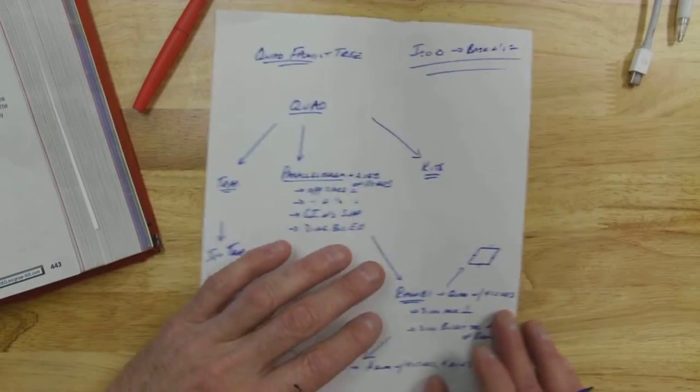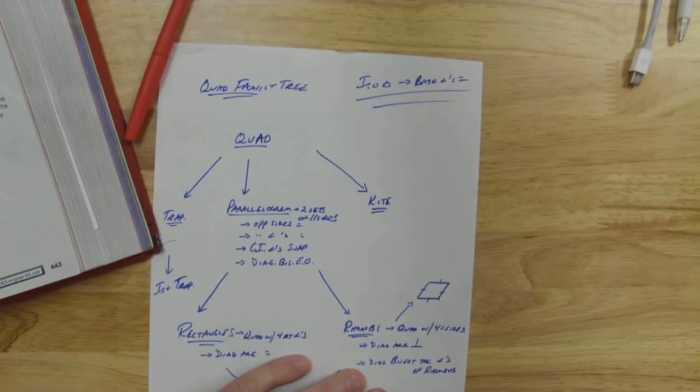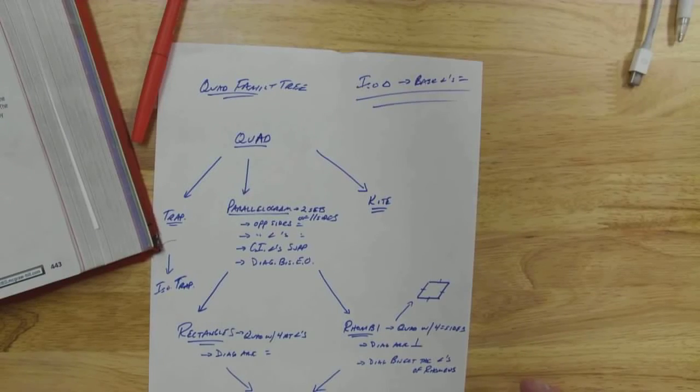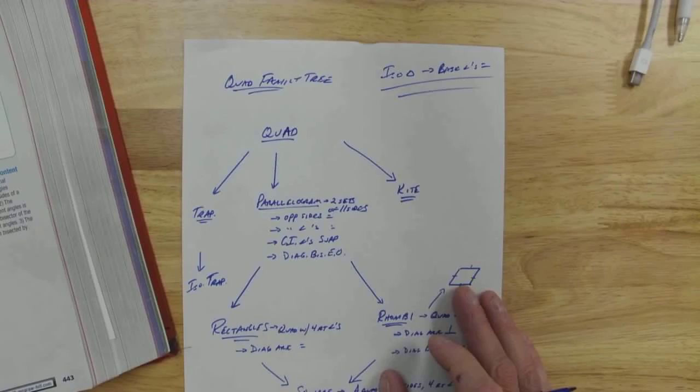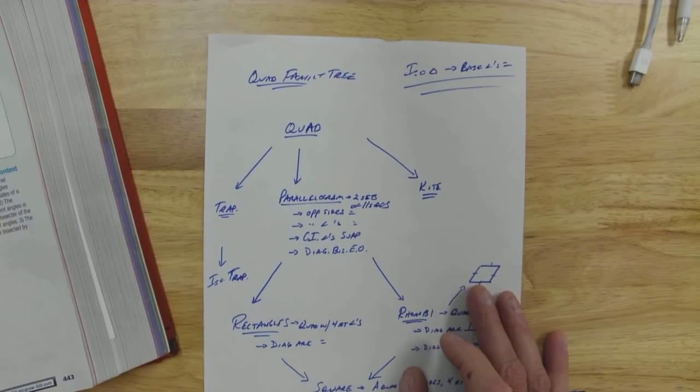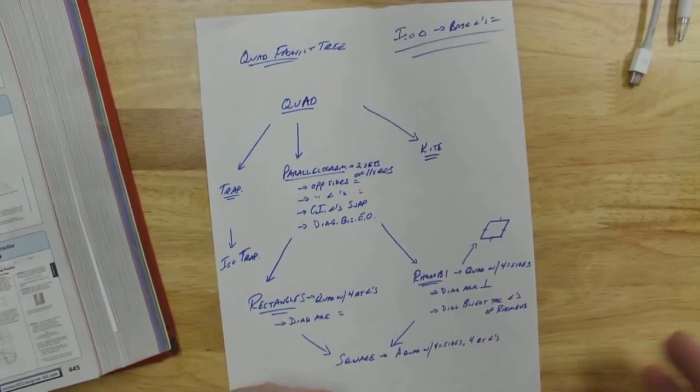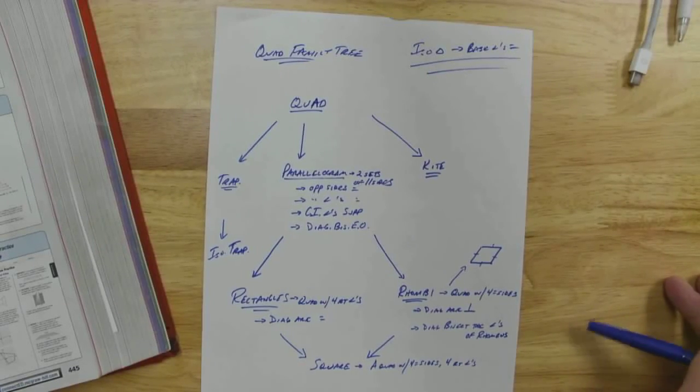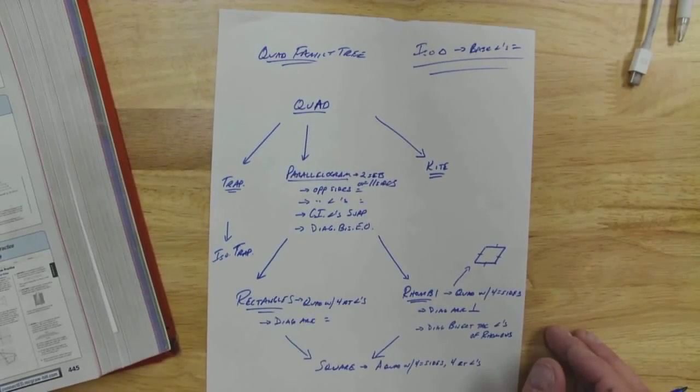If I wanted to show something was a kite using distance or slope, slope would do me no good. I'd have to show that I'd have two sets of congruent sides that are adjacent or consecutive or next to each other. I'll have to see if I can find some more information about zoids because obviously you guys don't believe it. I wish I still had my textbook from college.